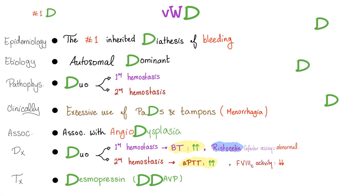For diagnosis, it's the same dual pattern: primary hemostasis defect gives prolonged bleeding time and abnormal ristocetin cofactor assay. Secondary hemostasis gives prolonged PTT and low factor VIII activity. Treatment is desmopressin or DDAVP — it's as if they were thinking of my mnemonic before they named it.